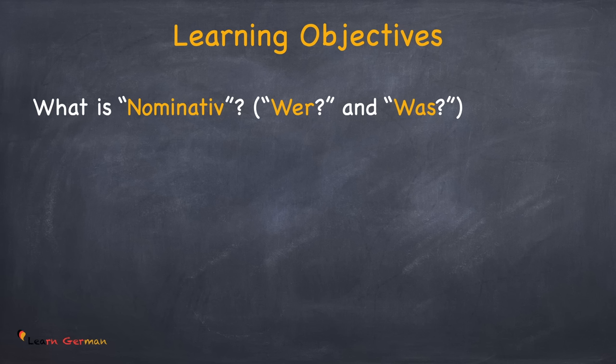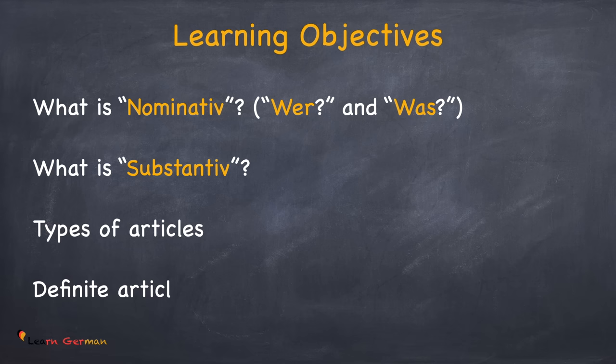Let's first go through our learning objectives for this lesson. First of all, we'll understand what is nominative — wer und was. It is also important to understand what is a Substantiv, after which we'll be discussing the various types of articles. And in this video, we'll be doing basically the definite articles. So, let's begin.